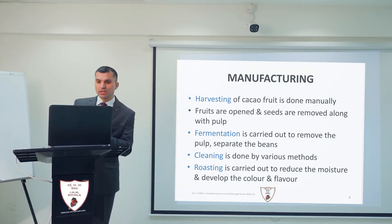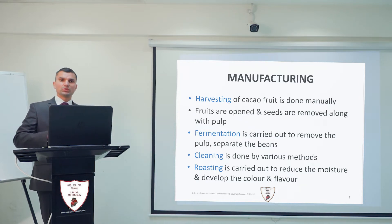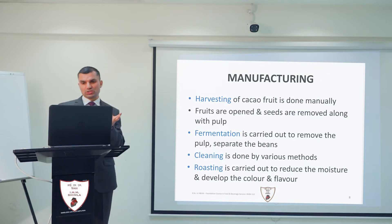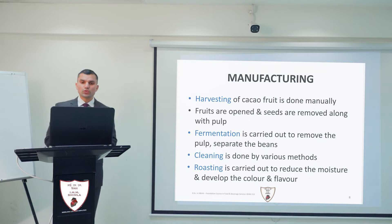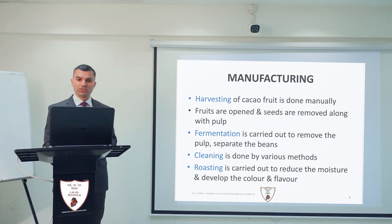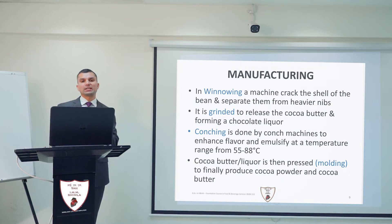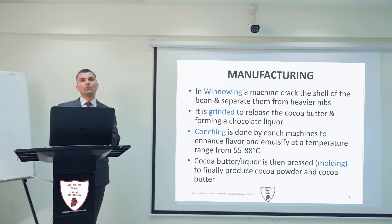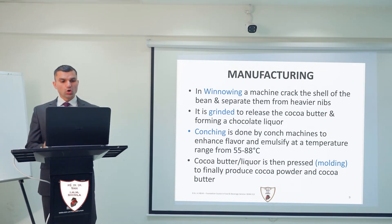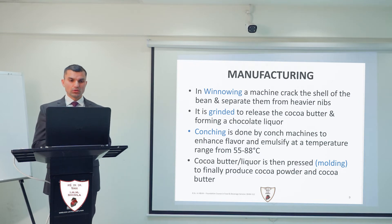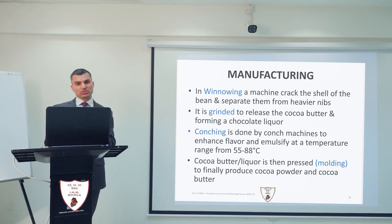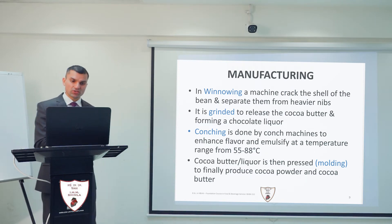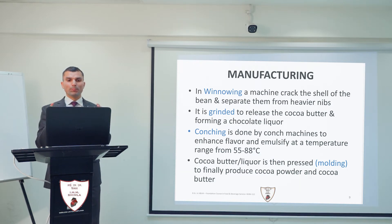After fermentation, the cleaning of these beans is done by various methods — it could be through washing — in order to remove dust or other particles. Roasting is done in order to reduce the moisture and develop the colour and flavour of these beans. This is followed by winnowing, in which a machine cracks the shell of these beans and separates it from the heavier nibs. Further, these nibs are ground in order to release the cocoa butter and form a chocolate liquor.